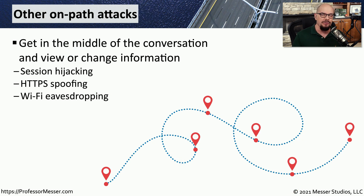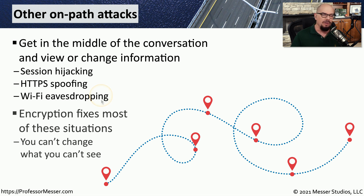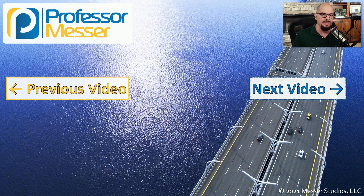There are many different ways for an attacker to gain access into these conversations and perform an on-path attack. You might see session hijacking, HTTPS spoofing, or something as easy as eavesdropping over a Wi-Fi connection. In almost all of these situations, you can avoid these types of on-path attacks by simply using encryption. If the attacker can't see the information contained within the packets, your data will remain safe, and an encrypted connection can't be modified, so an attacker would not have a way to inject their own data into your existing data flows.